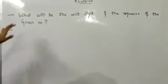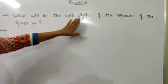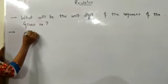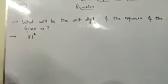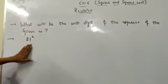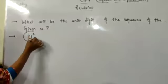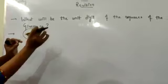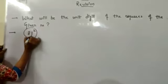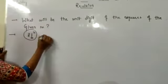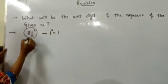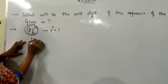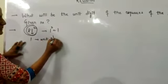Next, we have to find what will be the unit digit of the square of a given number. Let's say we have 81 and we need to find what will be the unit digit of its square. At the unit place of 81 we have 1, and the square of 1 is 1. So whenever we square 81, the digit 1 will come at the unit place.